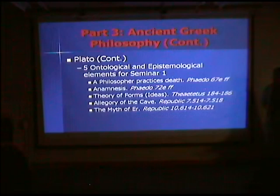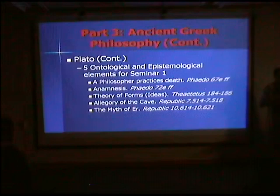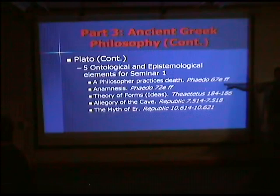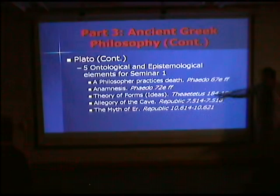For this first seminar we'll look at five ontological and epistemological elements from Plato — the theory of being and the theory of knowledge. These include: a philosopher practices death (Phaedo, starting at paragraph 67E); Anamnesis — the opposite of amnesia, meaning remembering, the theory that knowledge is recollection from a previous lifetime; the theory of the forms, from the Theaetetus; the allegory of the cave; and the myth of Er.